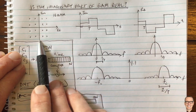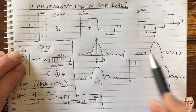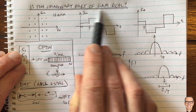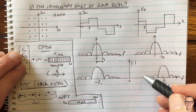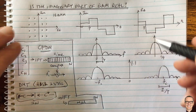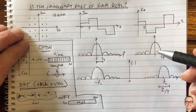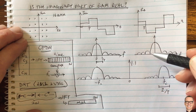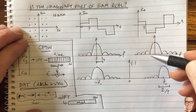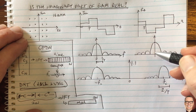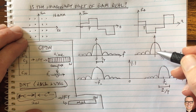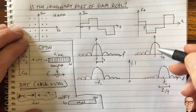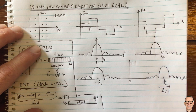So the answer is yes — the imaginary part of QAM is real, a real signal. I hope this gives more insight into QAM and what it means to have an imaginary component. If you found this video helpful, give it a thumbs up. Check out the details below for a fully categorized list of all videos on the channel, and subscribe for more.